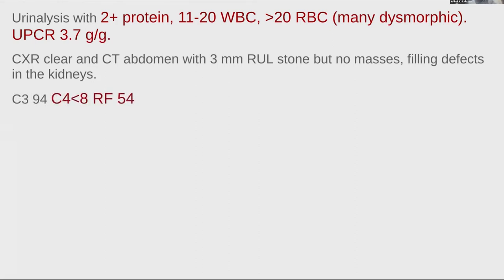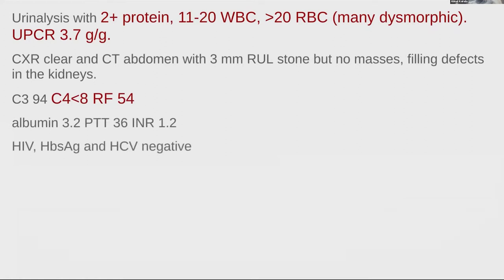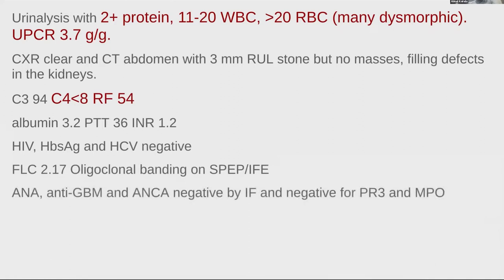Complements were notable: C3 was normal but C4 was very low, less than eight. Rheumatoid factor was positive. Albumin was low at 3.2. The rest of the serological workup was negative and paraprotein workup was negative as well. ANA, anti-GBM, and ANCA were negative, both by IF as well as by Bioplex.